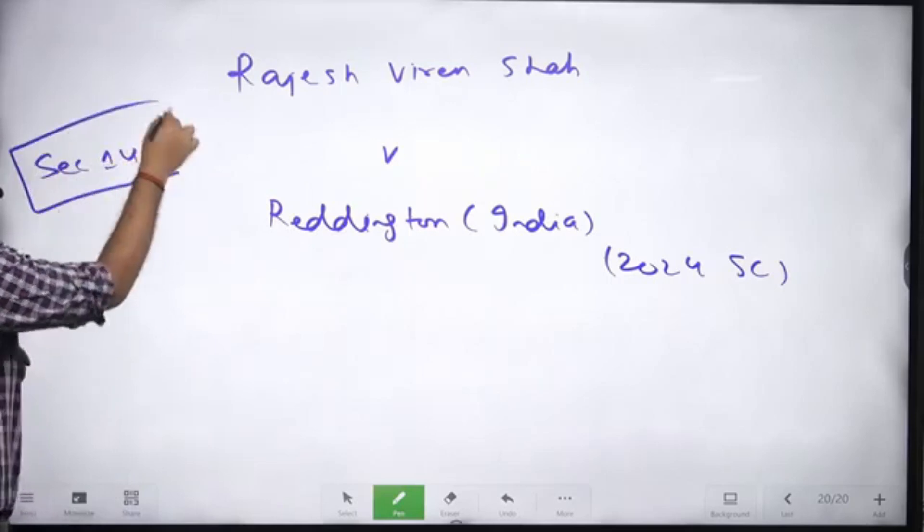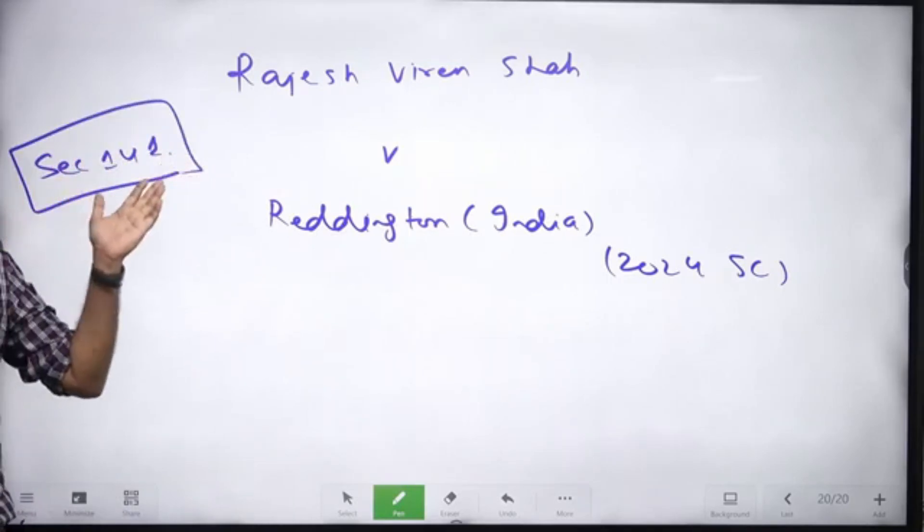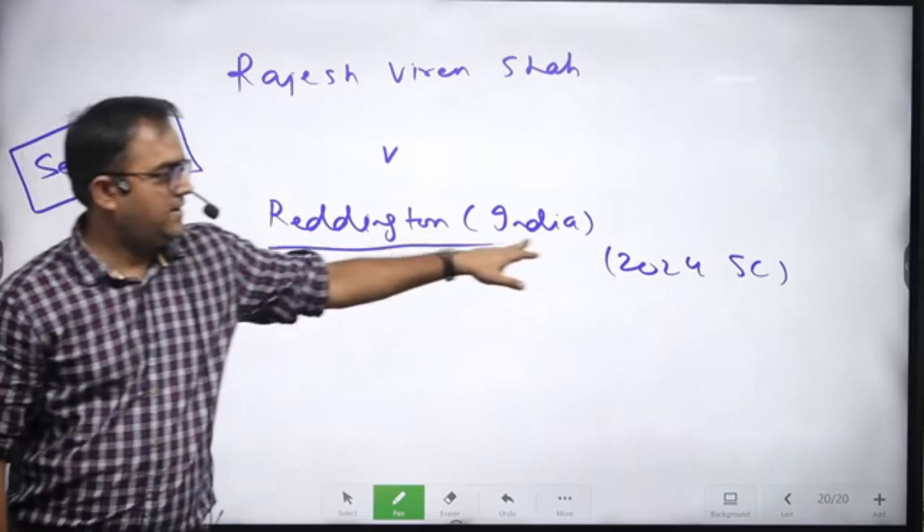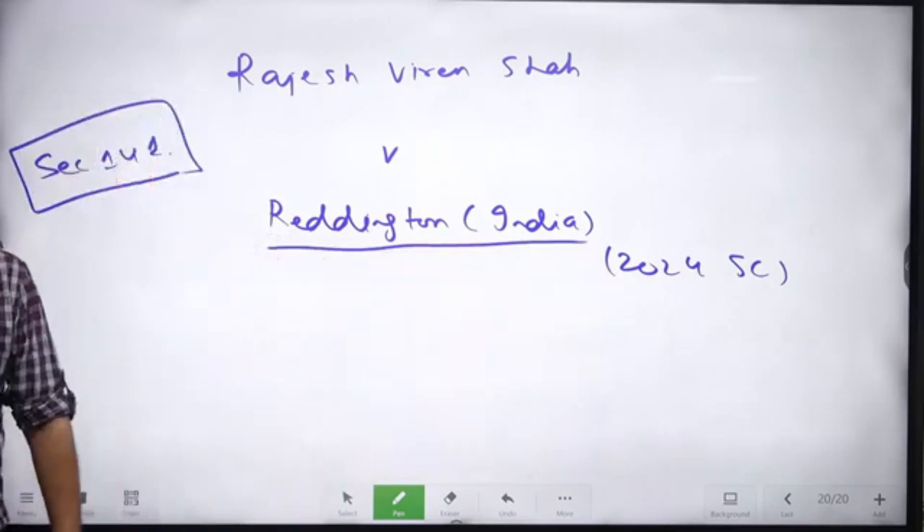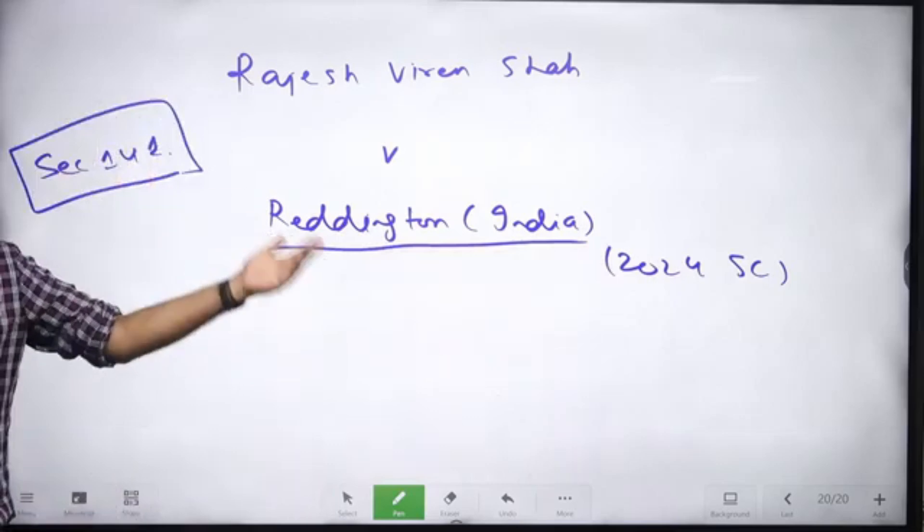How do you know that this is our section 141? What is this? It is a company, Reddington India. So the company has checked the check issue because it was dishonored.